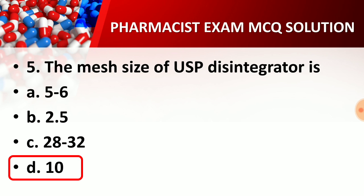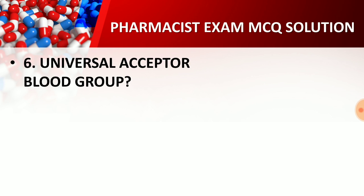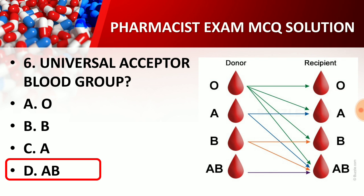Question number six: Universal acceptor blood group is — option A, O; option B, B; option C, A; option D, AB. The right answer is option D, AB. Blood group O is the universal donor as it gives blood to everyone, while blood group AB is the universal acceptor as it can receive blood from all groups.